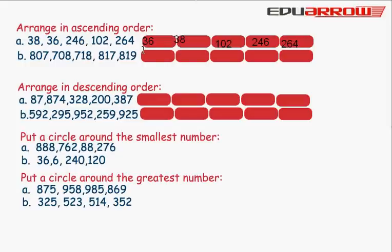Here we write the smallest number: 708, 718, 807, 817, 819.